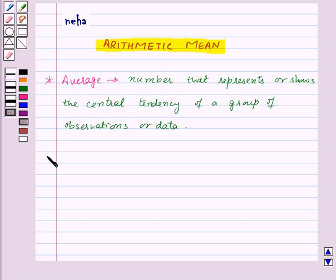Now different forms of data need different forms of representative or central value to describe it. So here one of the representative values is arithmetic mean.